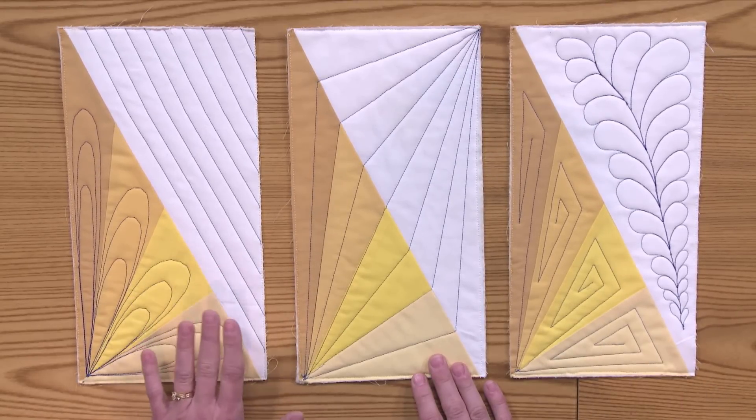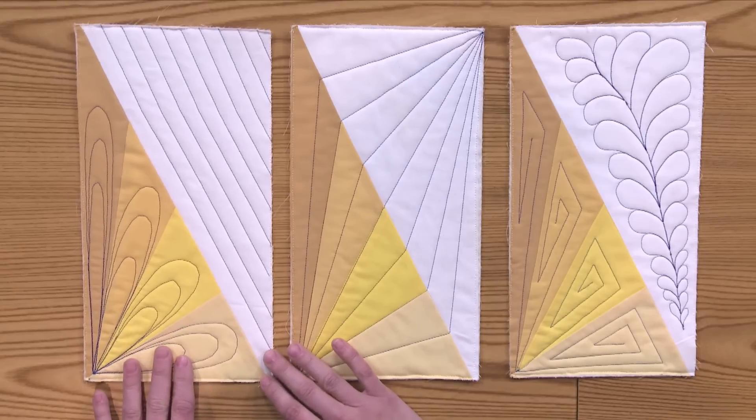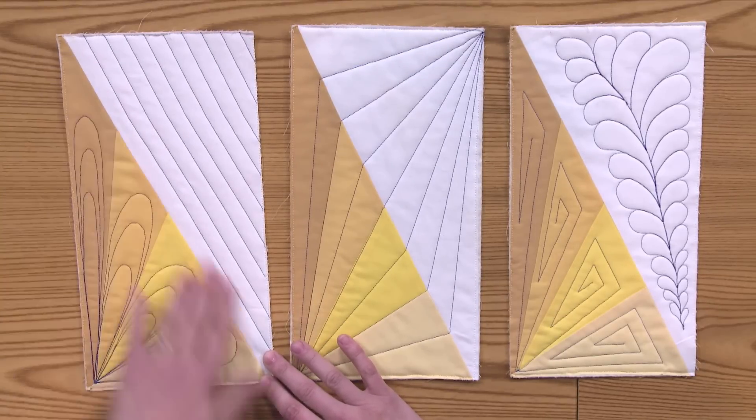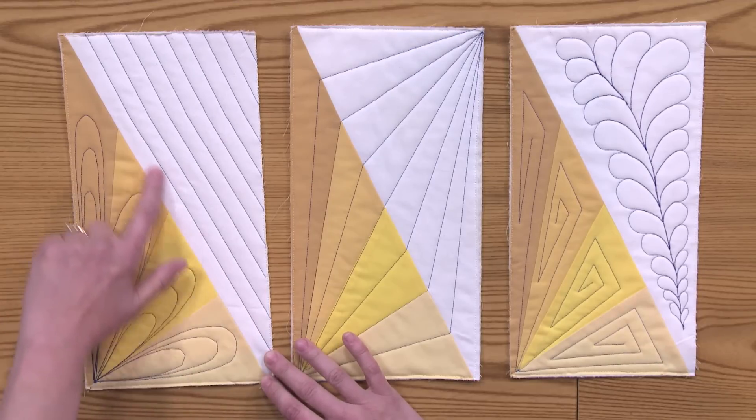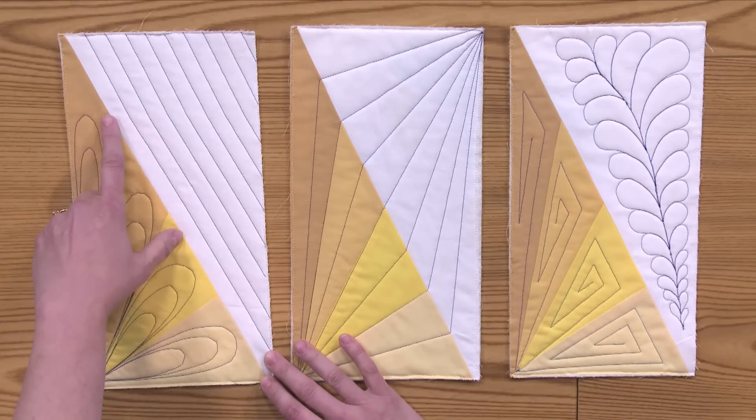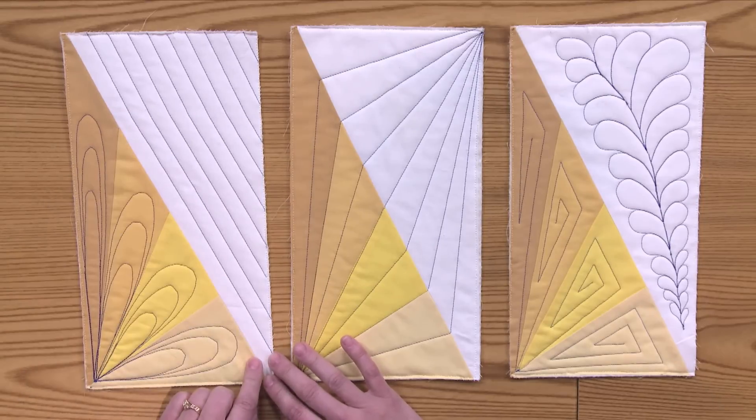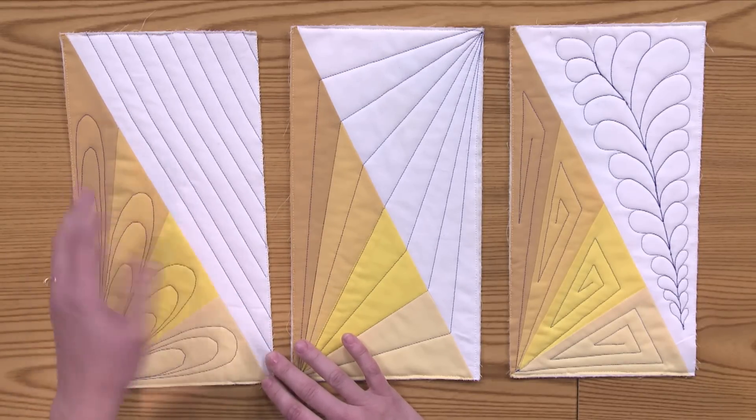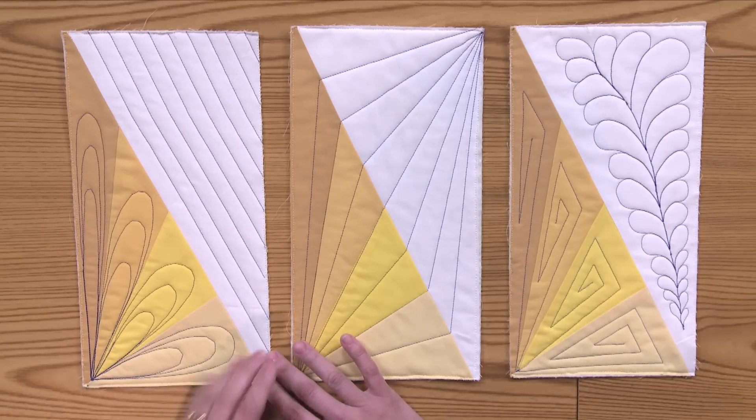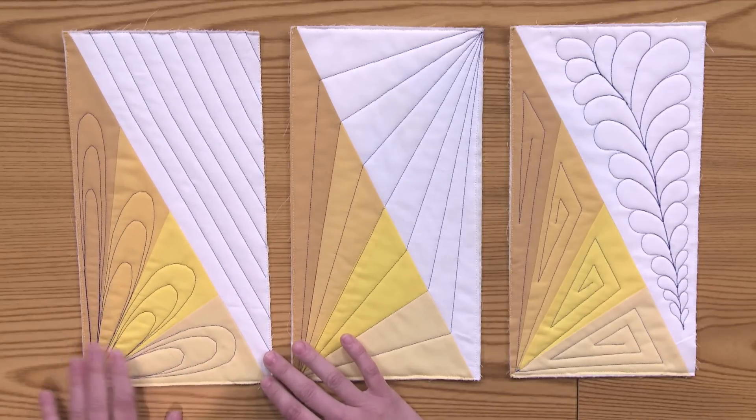So this first block takes the patchwork as a guide. First, on the white patches, you can just quilt straight lines. You can either mark them with a marking tool, or you can lay down painter's tape and just quilt these straight lines approximately three quarters of an inch apart. And you can also use your walking foot as a guide.